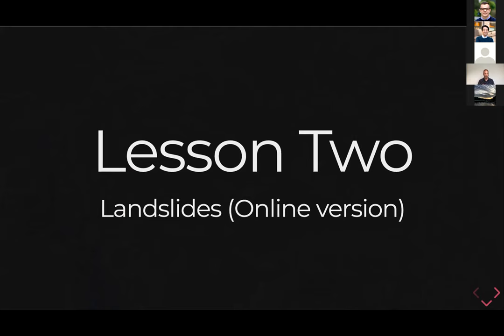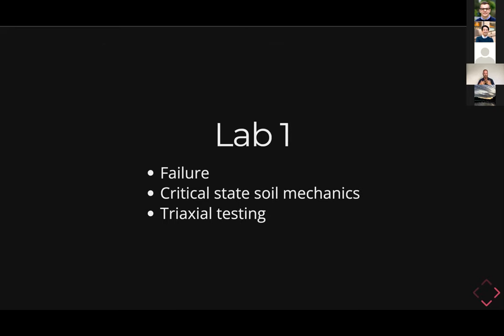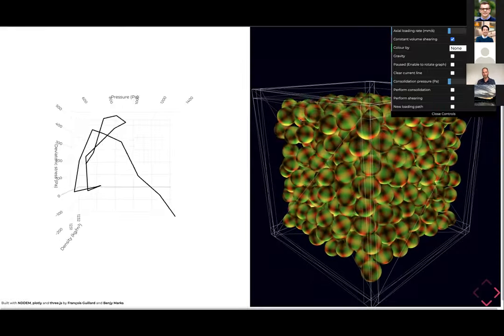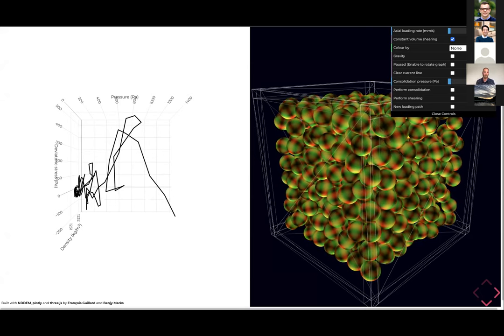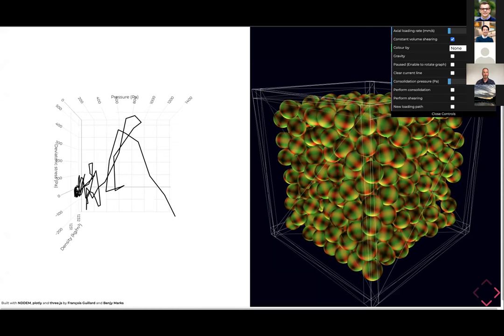That's it for lesson one on representative volume elements. Lesson two is all about landslides. We'll start really at the micro scale — measuring and understanding material properties of landslides — and then go all the way through to modeling full-scale landslides in a teaching environment. The first lab proposes teaching students about failure in the context of critical state soil mechanics, using a simulation of a triaxial test. I'm not much of a geotechnical engineer myself, so we have a cube as our experimental domain — I understand most people use a cylinder for a triaxial test; it's a work in progress.